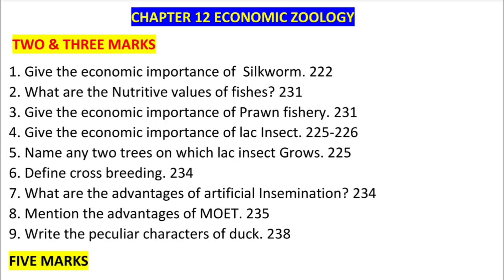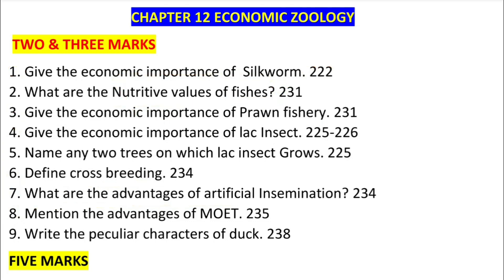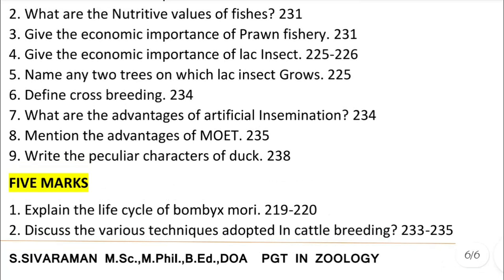Next, silk palm and multiple important issues are covered. Topics include prawn fishery, nutritive value of fishes, and various techniques adopted in cattle breeding. These are important 5-mark questions.